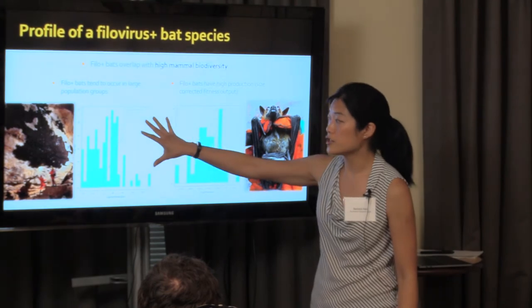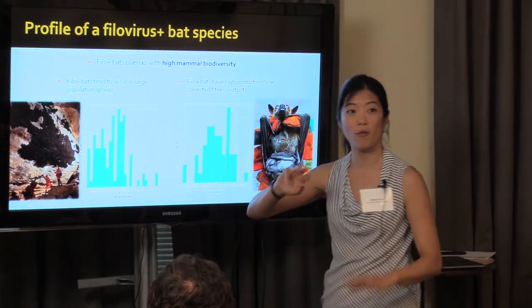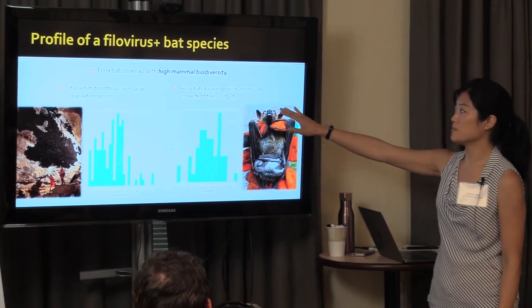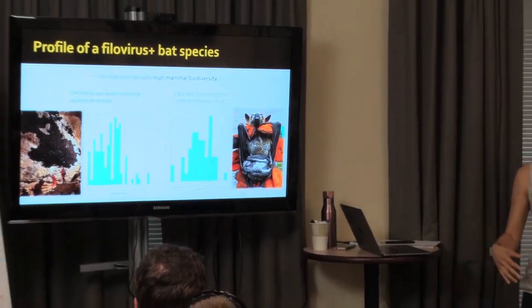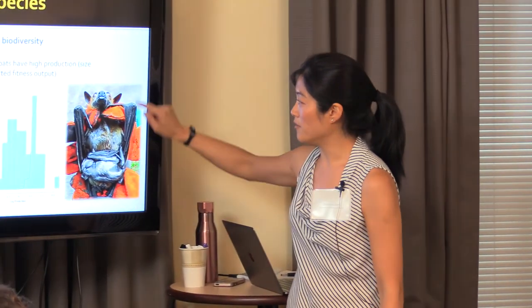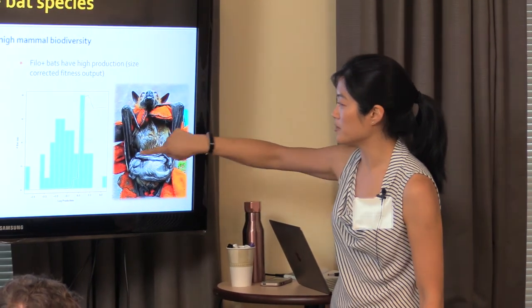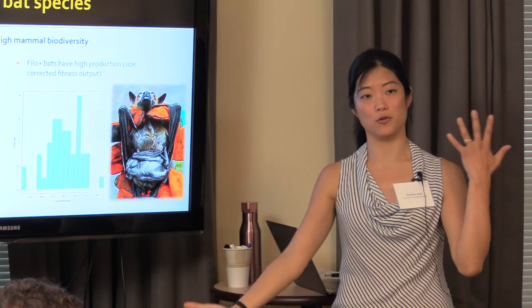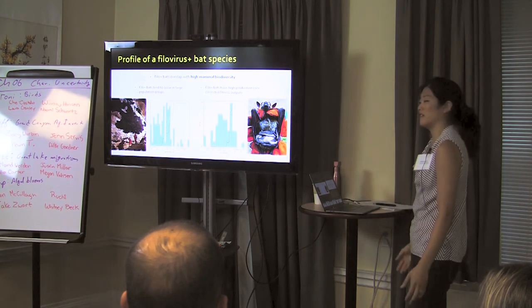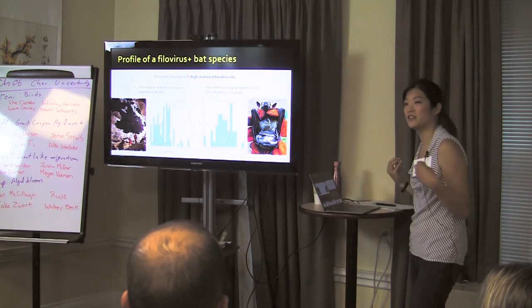Another key output was that filovirus bats tend to have high production — a size-corrected measure of reproductive output, basically biomass produced per unit body mass. But honestly, I can hand-wave about what these variables mean. I don't have a clear ecological story for all of them. So we tried the same type of analysis with Zika virus and primates, right after the Zika outbreak in the Americas — asking which primates are susceptible to becoming spillback hosts and therefore long-term Zika reservoirs.